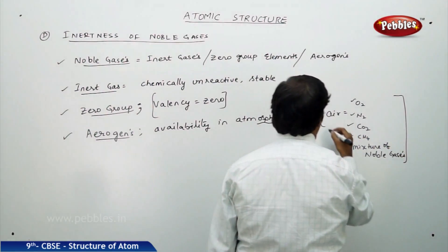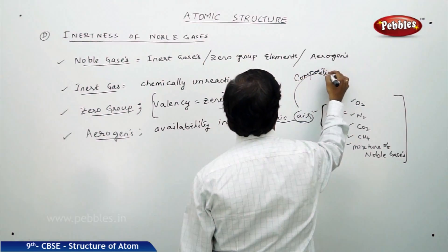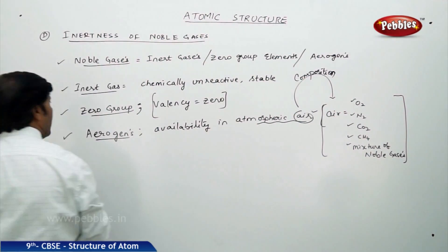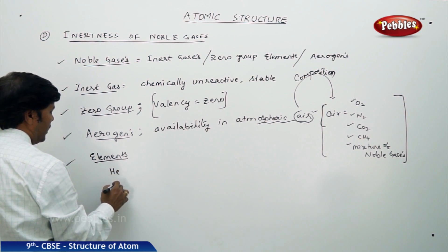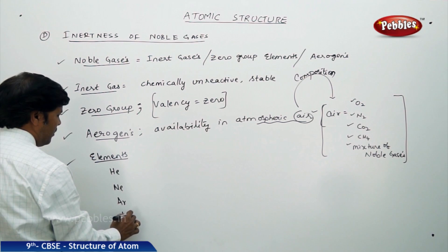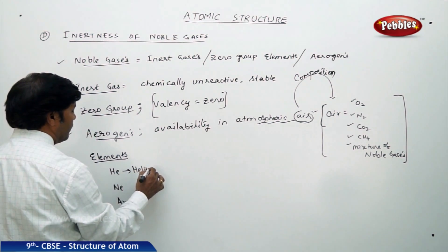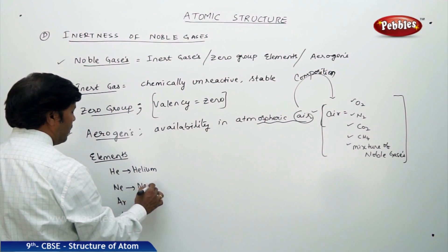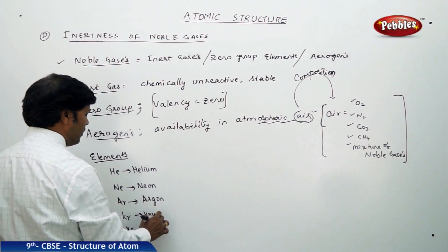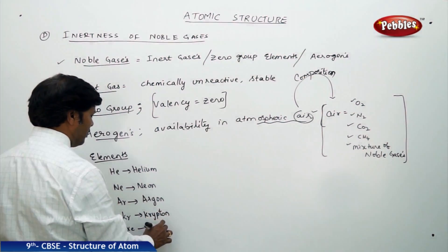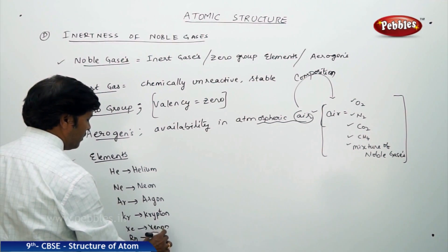We need to isolate all the gases present in the mixture. The noble gas elements are helium, neon, argon, krypton, xenon, and radon. We use the symbols He for helium, Ne for neon, Ar for argon, Kr for krypton, Xe for xenon, and Rn for radon.